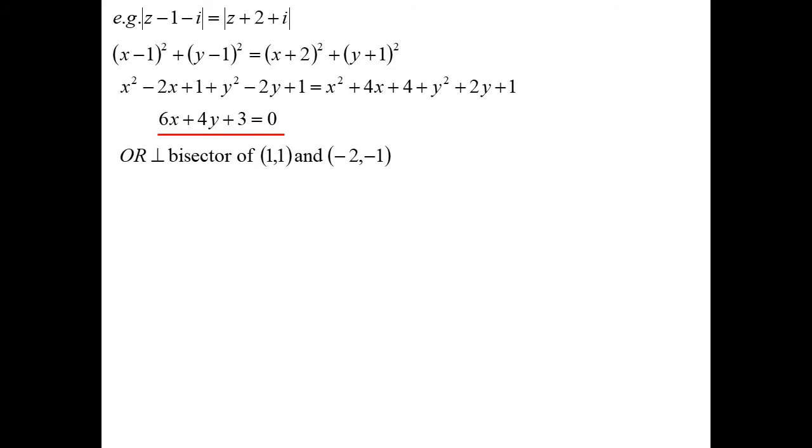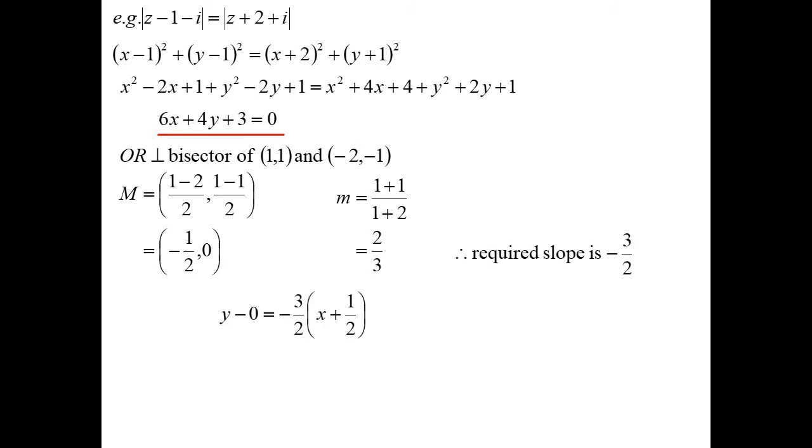The other way we could do this, if we recognize it straight away and go, hey, I know this is going to be the equation of a line, and I know that is going to be the perpendicular bisector of two points. In this case, the point would be 1, 1 and minus 2, minus 1. So I could say I'm just finding that perpendicular bisector. Find the midpoint of the two points, minus half zero. Now I need the slope of the line. Well, the slope that joins those two would be two thirds. So the one we want is minus 3 on 2. Point slope formula. And surprise, surprise, we get the exact same equation.